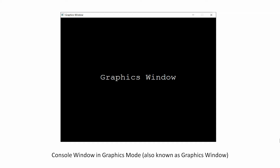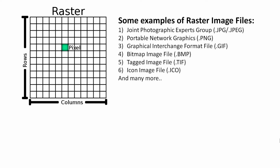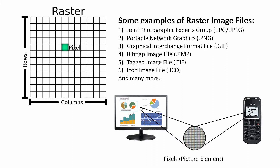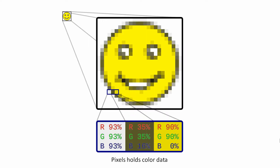Here comes the concept of console in graphics mode. This graphics window is basically a lot of pixels arranged in rows and columns. A pixel is nothing but the smallest point in a raster image. Even your monitor and phone display is made of the smallest addressable element, known as a pixel or picture element. These pixels hold color data, and when you see all these pixels together it appears to be an image.